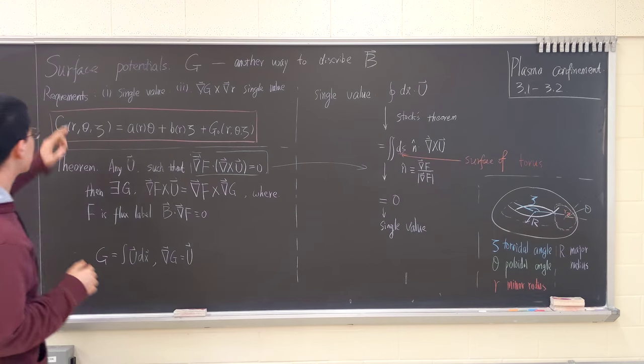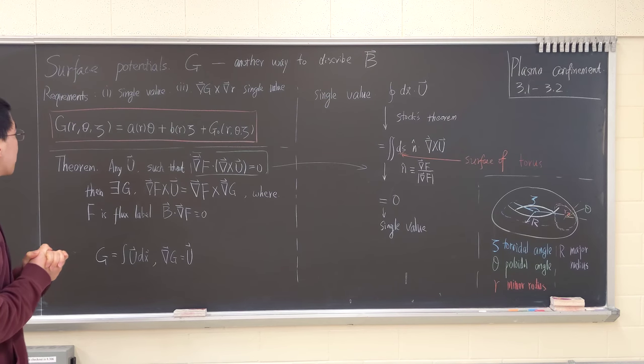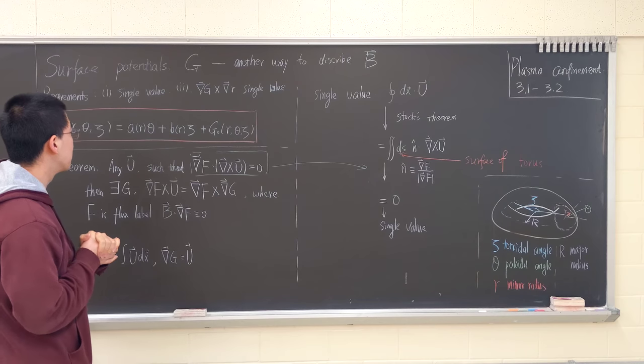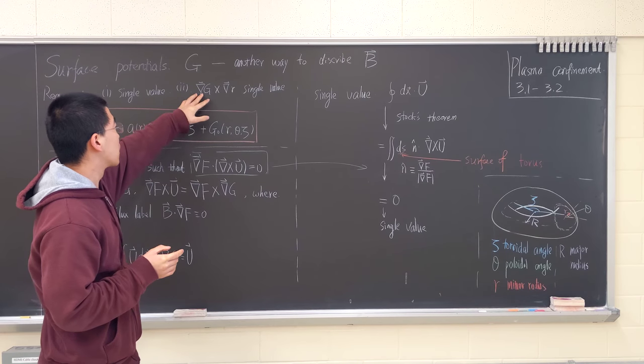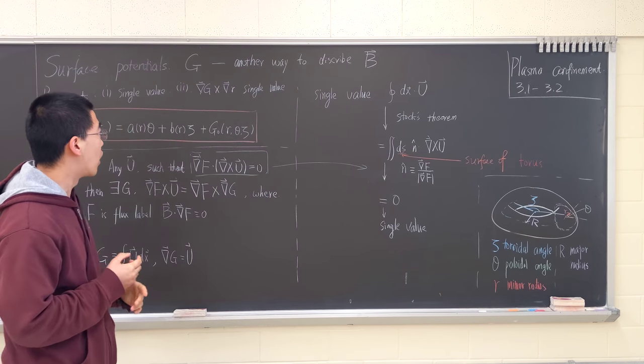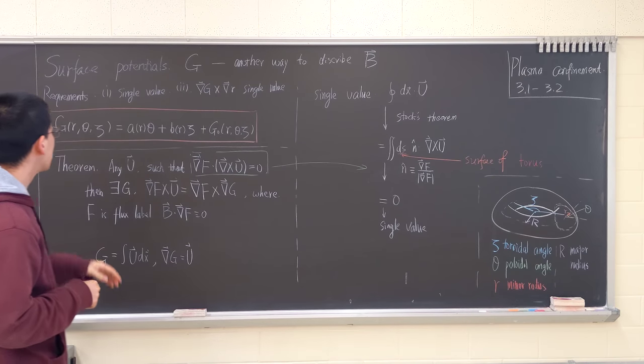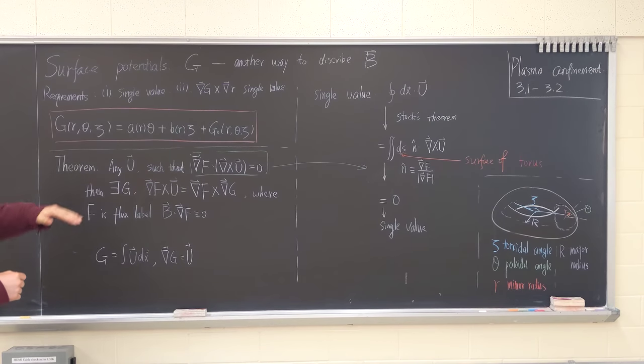Let's first talk about surface potential. The requirement of surface potential has to be single value and grad G cross grad R should be single value as well. The most general way to express the surface potential is...